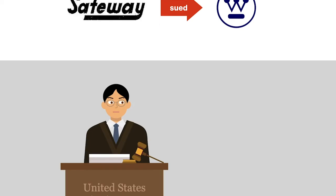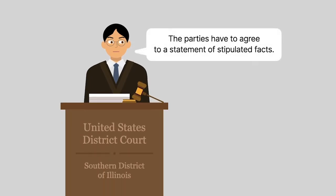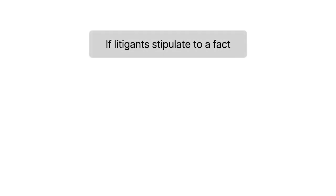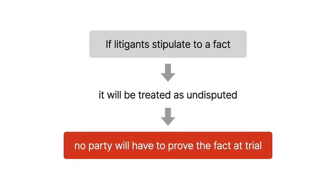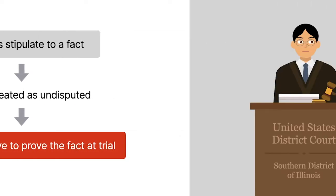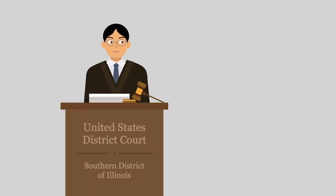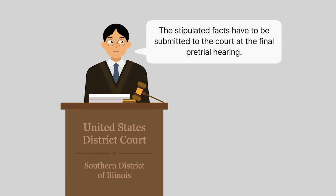As part of its standard practice, the district court's pretrial order directed that the parties agree to a statement of stipulated facts. If litigants stipulate to a fact, it will be treated as undisputed — no party will have to prove the fact at trial. The district court's pretrial order also set a deadline: the stipulated facts had to be submitted to the court at the final pretrial hearing.